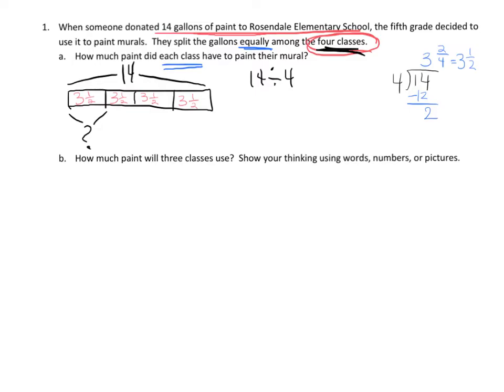So each class gets 3 and a half gallons. So I'm going to write that down: 3 and a half gallons per class.